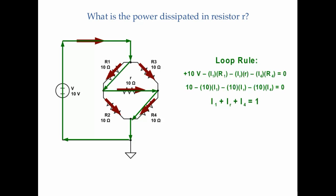For the final loop, I choose a path that goes through the top left of the bridge, through the center, and then the bottom right of the bridge. I can choose any paths I want — these are the three I happened to choose. This gives: plus 10, minus I1·R1, minus IR·r, minus I4·R4 equals zero. Plugging in the numbers, I get I1 plus IR plus I4 equals one.